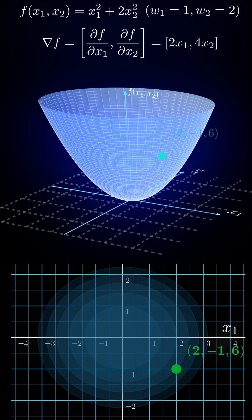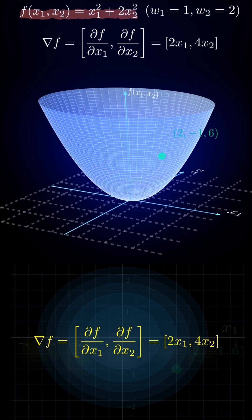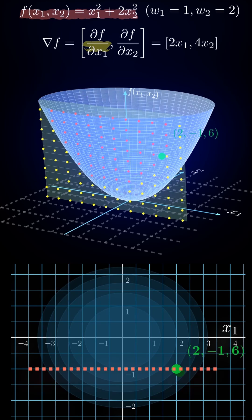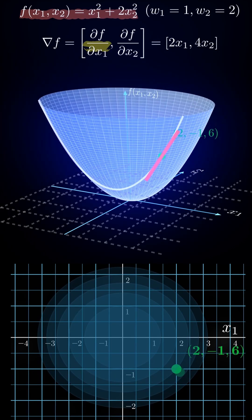Consider the point on the paraboloid. First, the partial derivative with respect to x1. This is like slicing the paraboloid with the plane x2 equals negative 1. That slice is just a parabola. As we take the derivative of that parabola, the slope changes. See how the red point moves along the curve and the tangent slope updates. At x1 equals 2, the tangent slope is 2 times 2 equals 4. This value, 4, multiplies the unit vector in the x1 direction, so we can draw a blue vector of length 4 along the x1 axis.